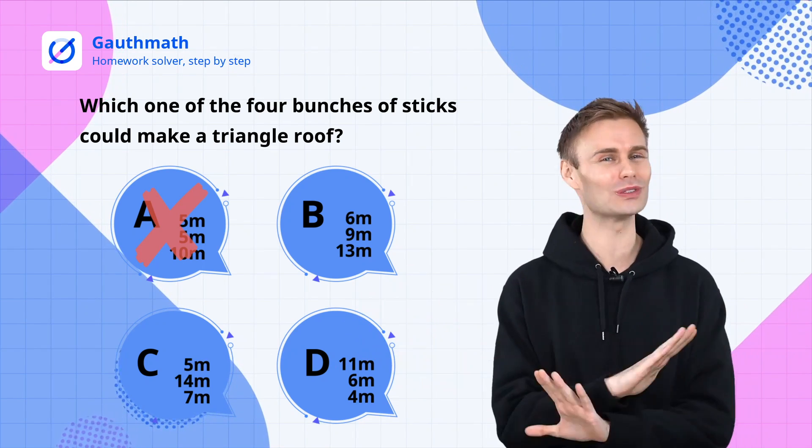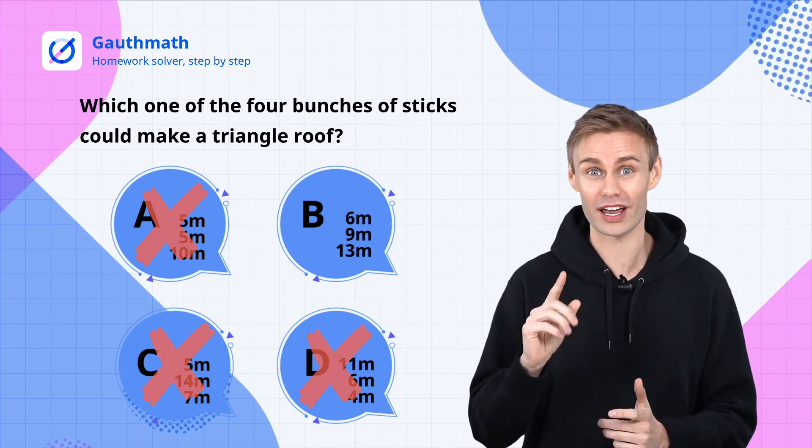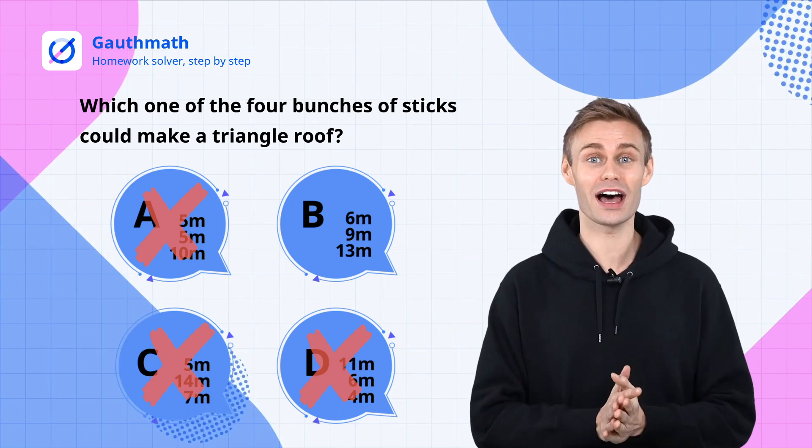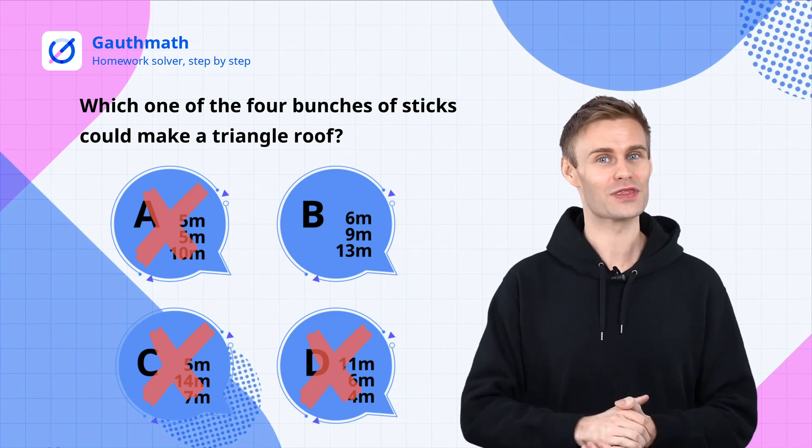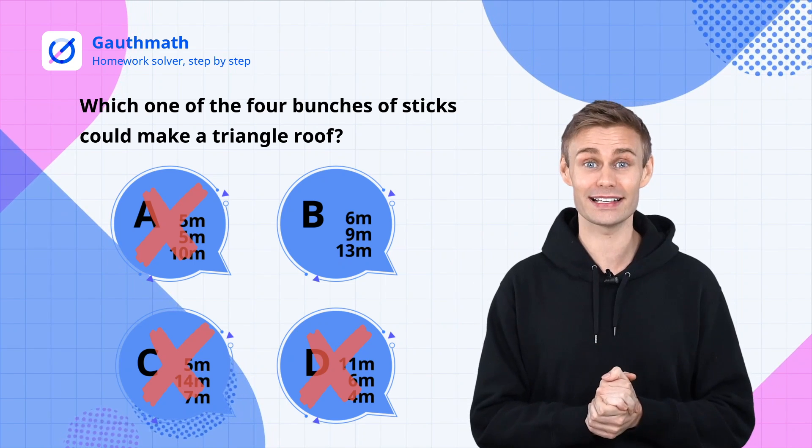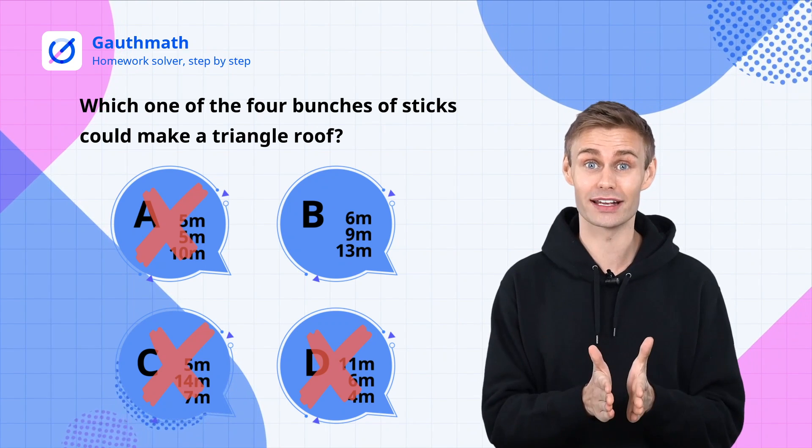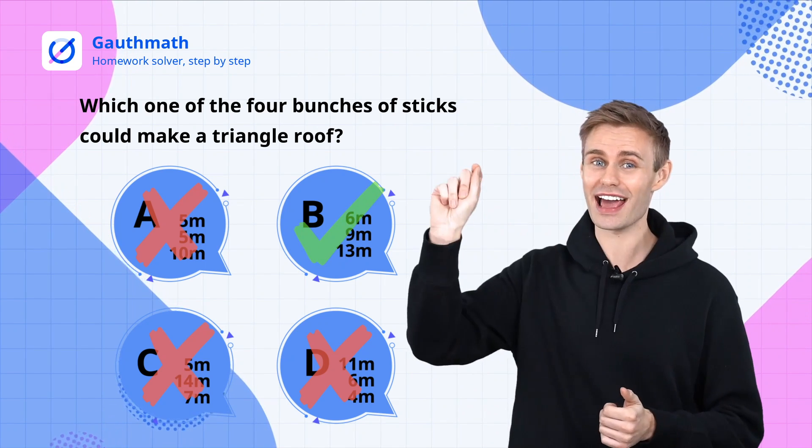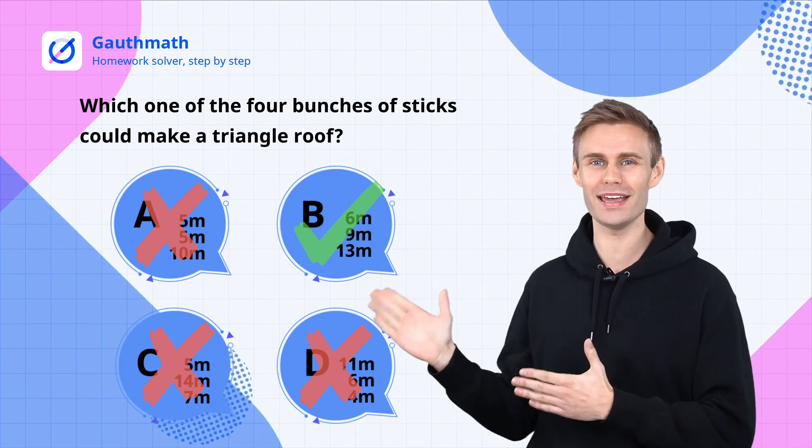Take a closer look at option B. 6 plus 9 is greater than 13. The first constraint is checked. And 13 minus 6 is 7, which is less than 9. Second constraint, checked. So the answer to this question is B.